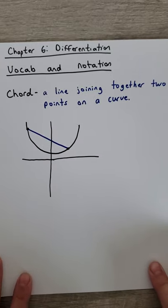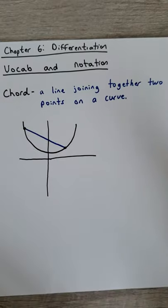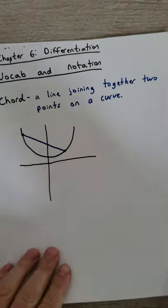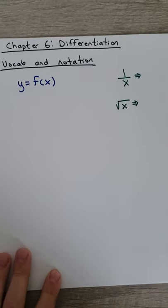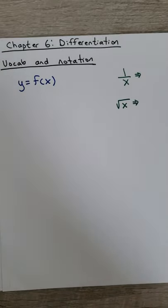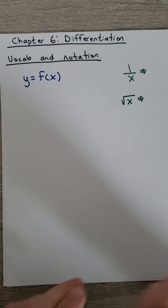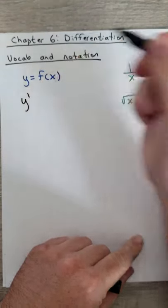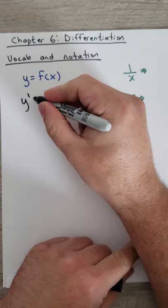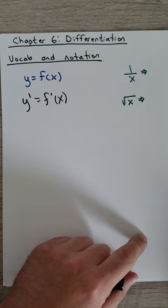The last piece of vocab is the chord. If you see that word, all it means is a line joining two points — any two points on a curve connected by a line. For notation: you're familiar with y equals f of x, which is the expression for a function. When dealing with derivatives we call that y prime, which means the derivative of y, or using f of x notation, f prime of x.